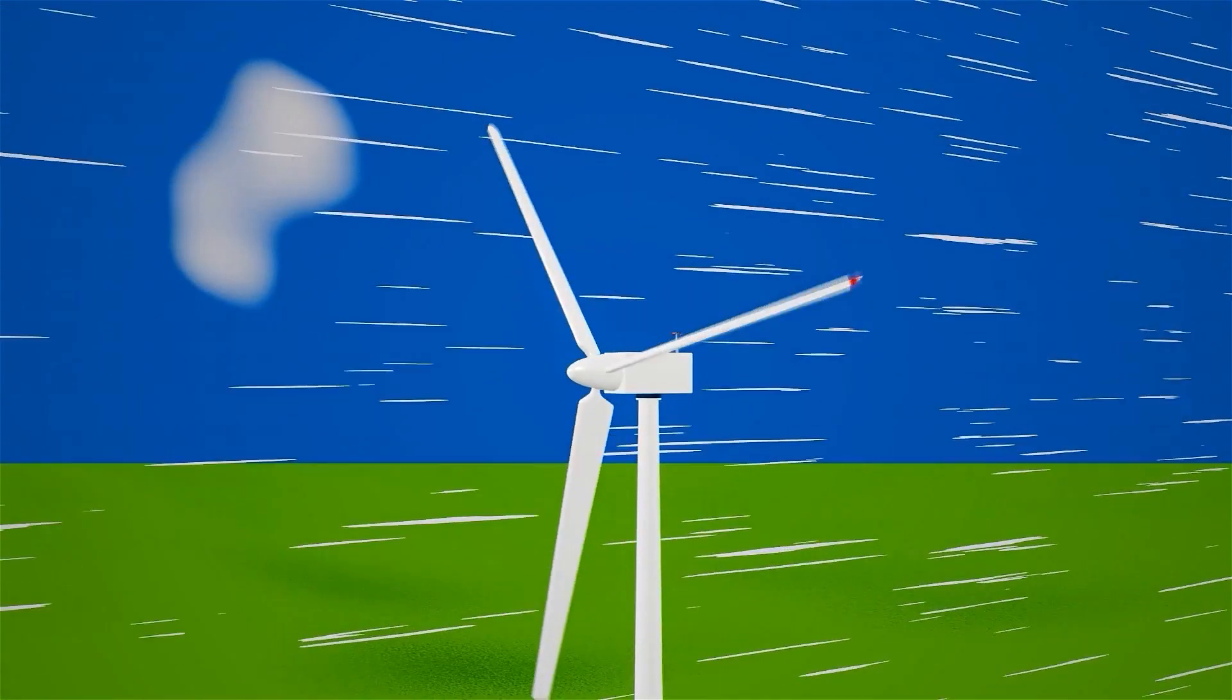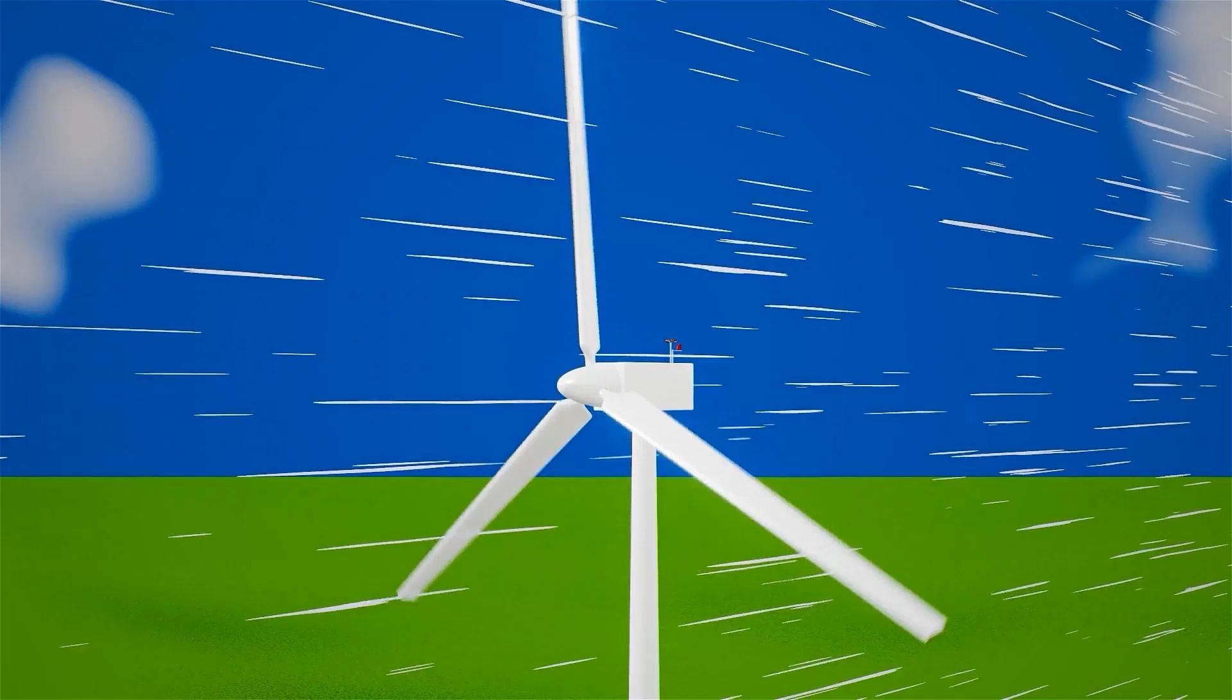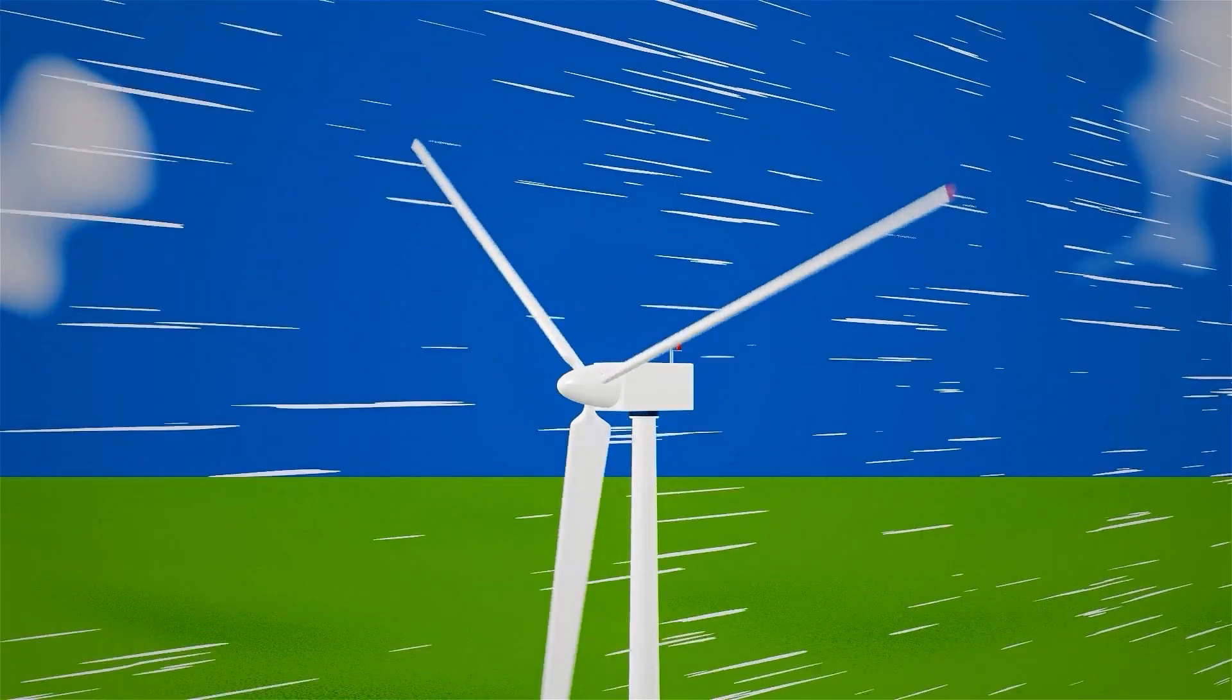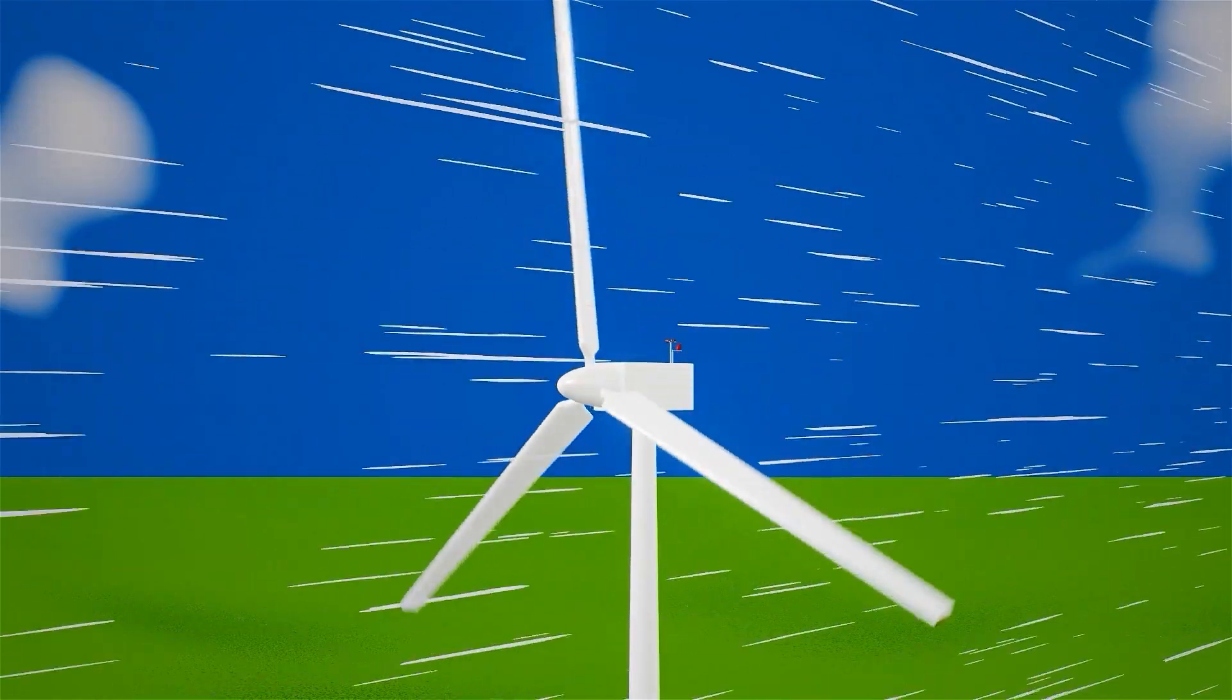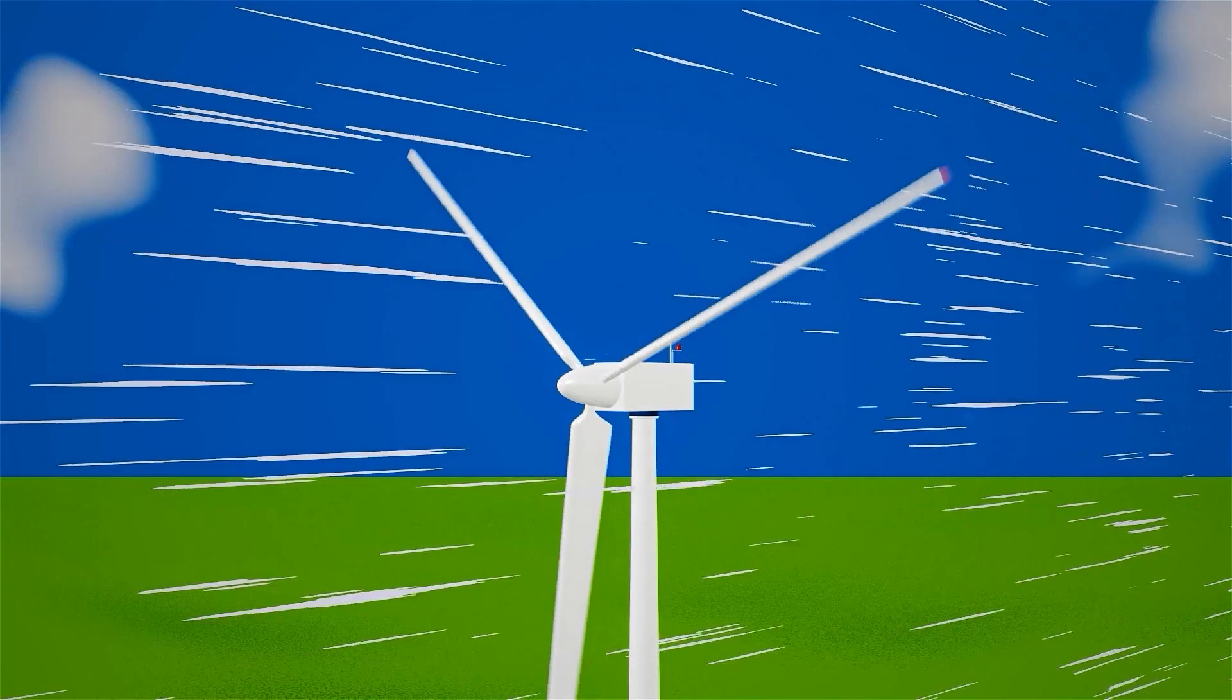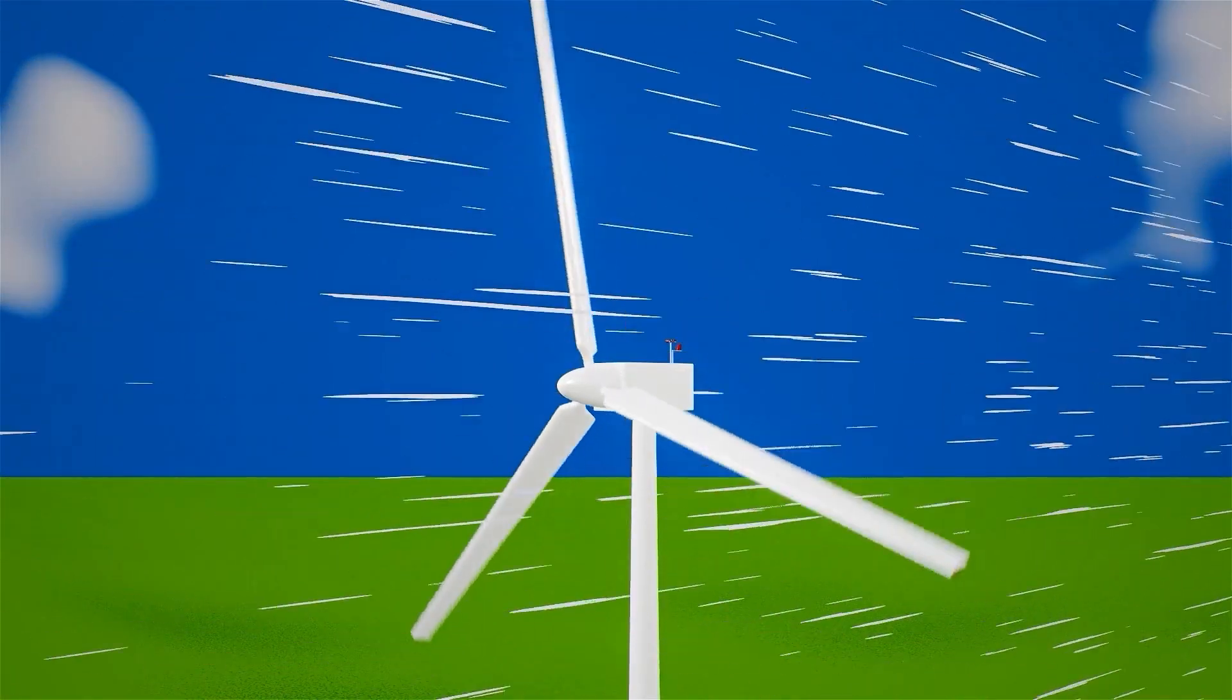The process begins with the turbine's blades, which are designed to capture the kinetic energy of the wind. Each wind turbine is equipped with three blades positioned at the front. When the wind blows, the shape and angle of the blades cause them to spin.